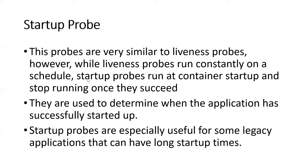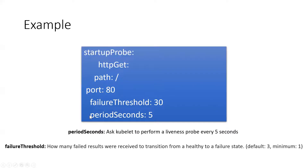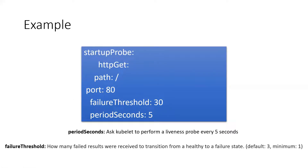The startup probe is defined the same way as the others — only the probe name changes. There is another parameter: failureThreshold, which defines how many failed results to receive before transitioning from healthy to failure state. This threshold is set as a number. Sometimes the startup takes a longer time, so the number may be a little higher. Calculate this number properly and set the startup probe accordingly.